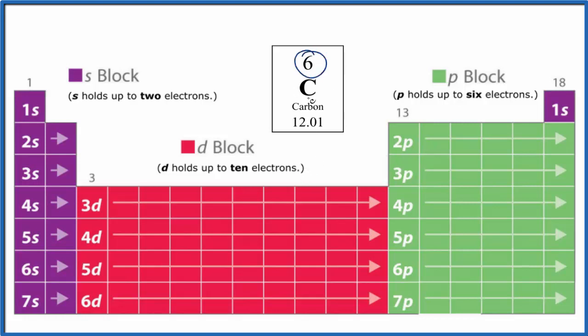Carbon on the periodic table has atomic number six, that means it has six protons. But since all elements on the periodic table are neutral, the number of protons and the number of electrons are equal, so carbon has six electrons.